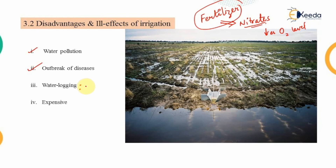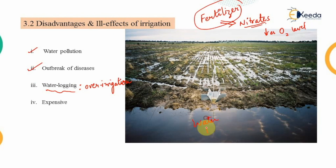The next ill effect of irrigation is over-irrigation. If we apply more water than is required, that leads to ponding in the field, which is known as waterlogging, as shown here. Waterlogging reduces the growth of the crop — as previously shown, with an increasing amount of water beyond the optimum, yield decreases.